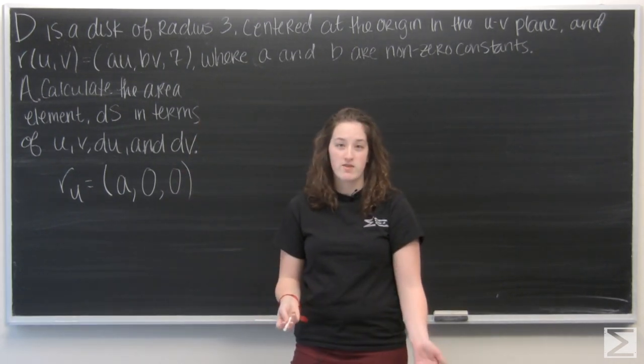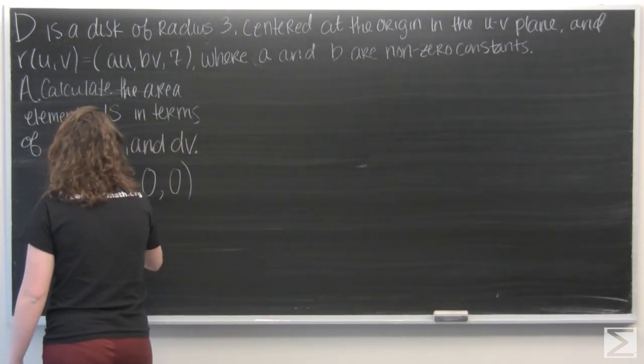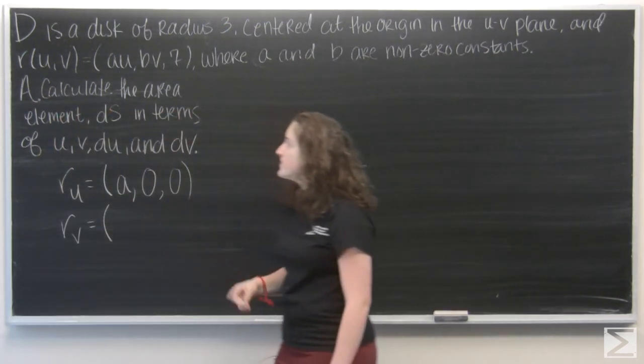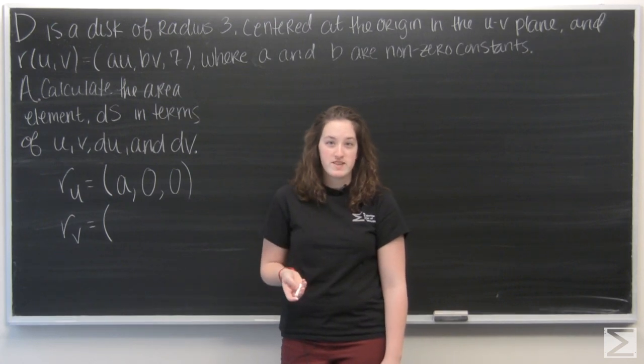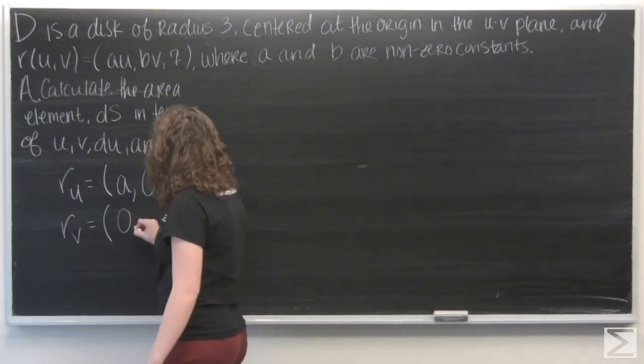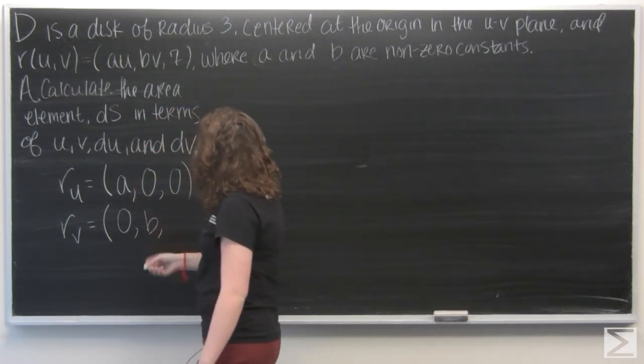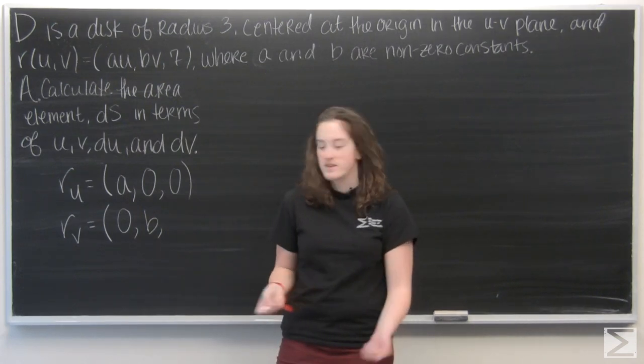Now let's find the partial derivative with respect to v. Well, like before, au will be treated as a constant, so its partial derivative will be 0. Bv will become b. And 7 will become 0.